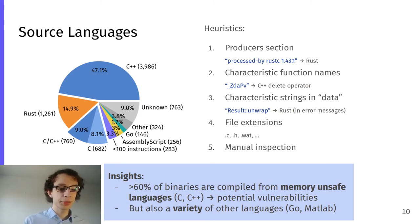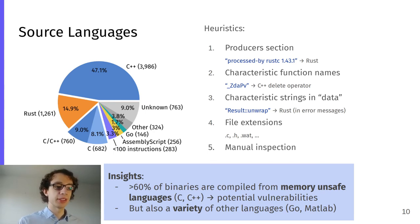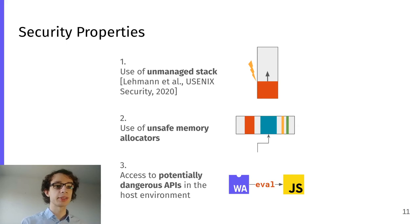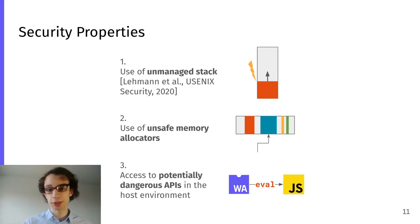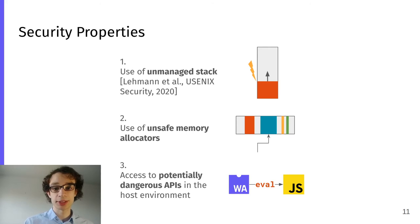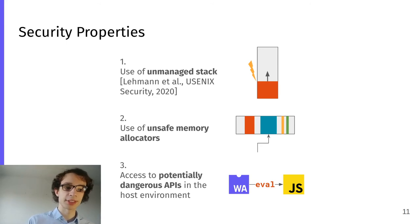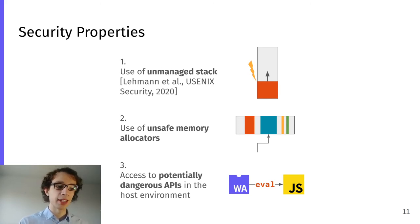We also look at security-relevant properties of binaries. First, we look at how many binaries make use of the unmanaged stack, which has been shown to be a source of vulnerabilities by Lehmann et al. Then we look at the memory allocators used — do they make use of unsafe memory allocators? Third, we check whether WebAssembly binaries access potentially dangerous APIs, for example whether they import eval from JavaScript. I won't cover this last part here, but I will briefly talk about the first two.